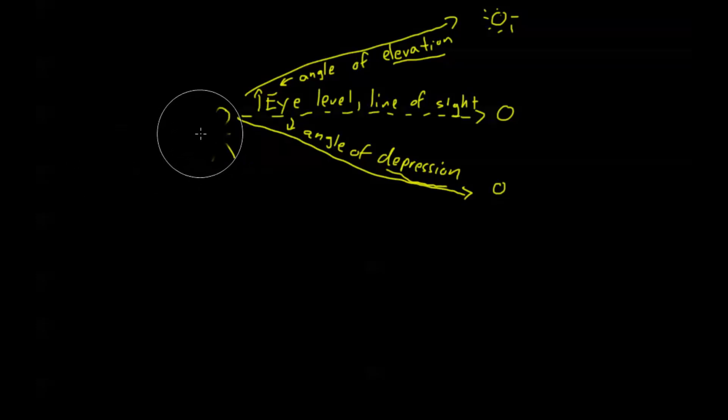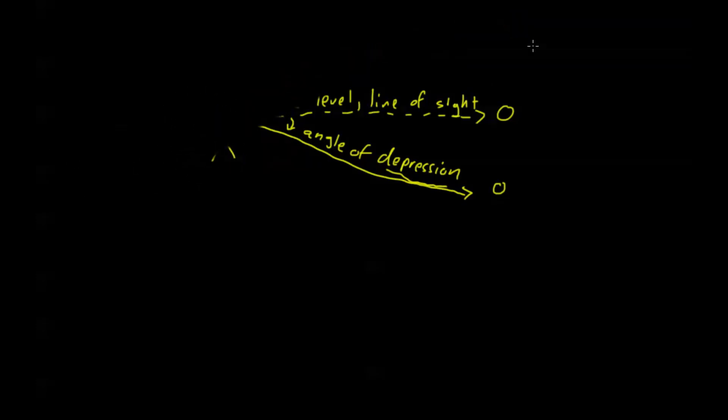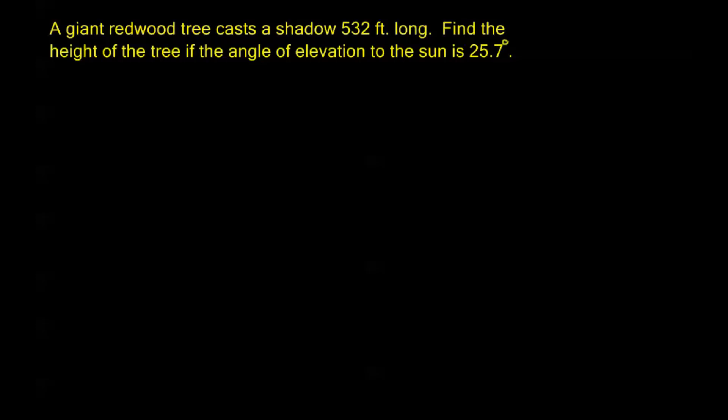I wanted to go over those because a lot of these word problems use these different terminologies. So let's get started. The first problem reads: A giant redwood tree casts a shadow 532 feet long. Find the height of the tree if the angle of elevation to the sun is 25.7 degrees.